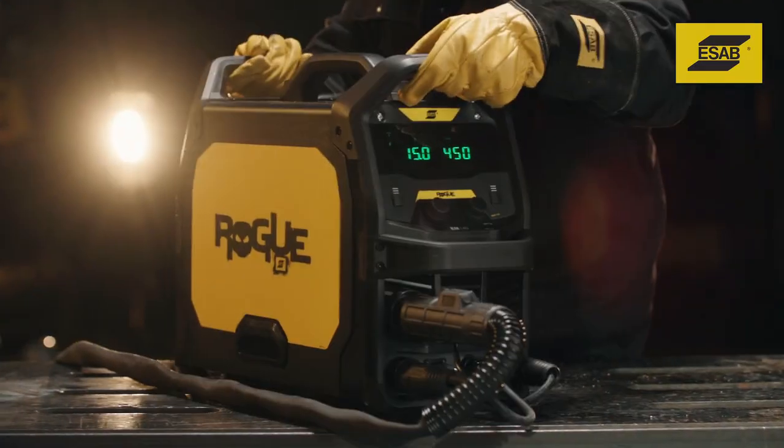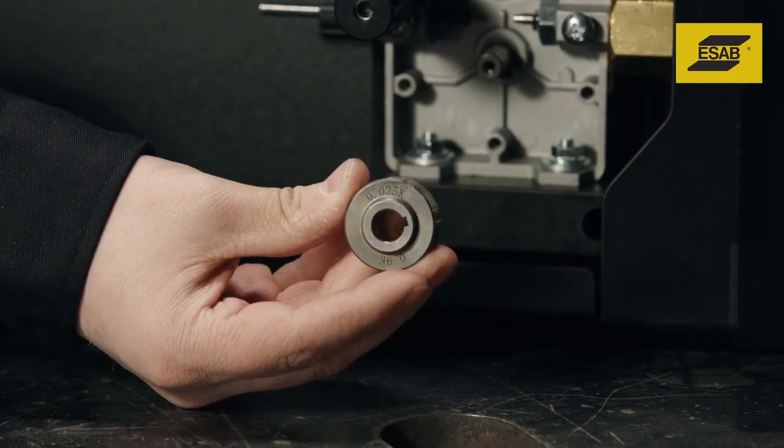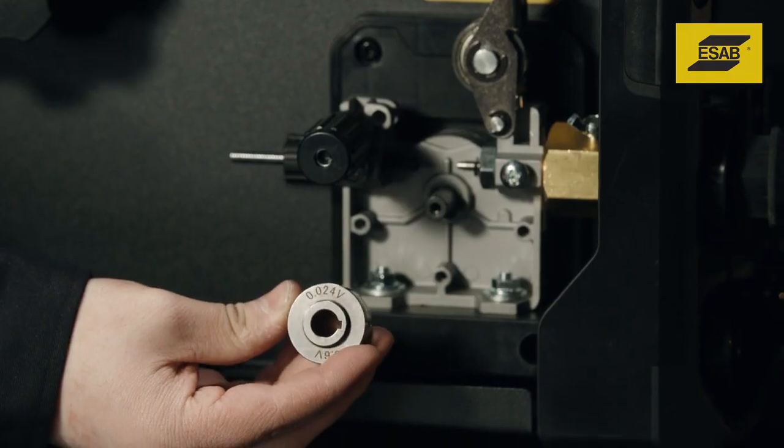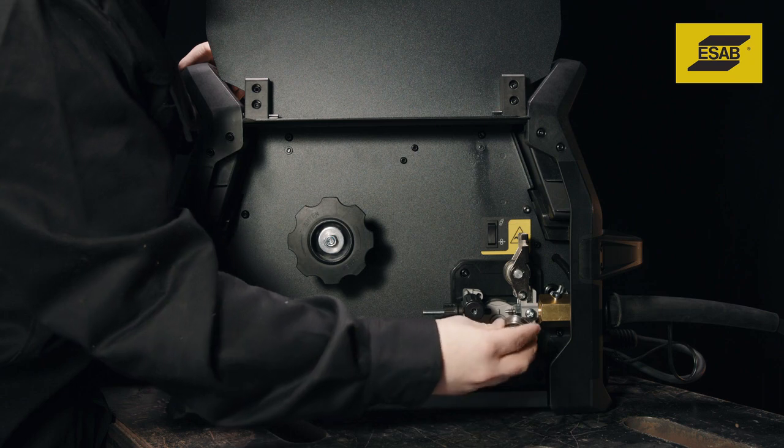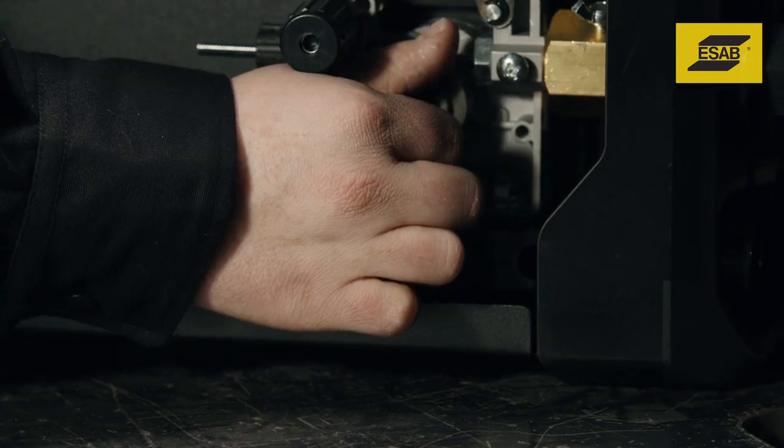On the Rogue 140 and 190 Pro, note that the wire size stamped on the outside of the roll corresponds to the diameter of the inside groove, which will be positioned beneath the wire feed inlet.